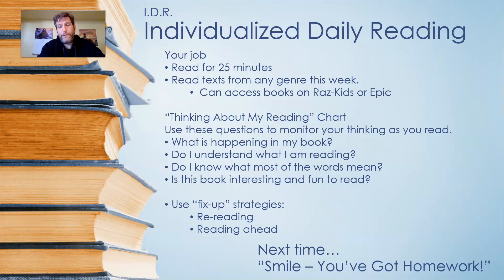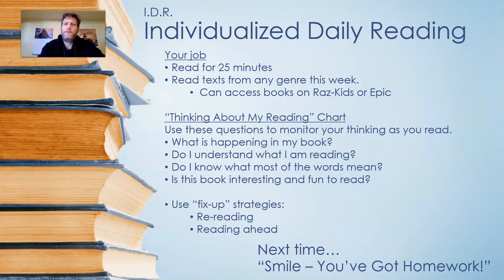It's your turn to go and read independently for up to 25 minutes. This is your individualized daily reading for today. Your job is to read for 25 minutes. You can read any text from any genre this week. You can always access books on Raz Kids or even Epic. Or if you have books at home, any book or genre is fine this week. But I want you to always be thinking about your reading as you read. In our different classrooms we have a thinking about my reading chart, and on this chart you can use those questions to monitor your thinking as you read. So you need to think about: what is happening in my book? Do I understand what I am reading? Do I know what most of the words mean? And is this book interesting and fun to read? Also, I want to talk about fix-up strategies. If you don't really understand something, you can always go back and reread it.